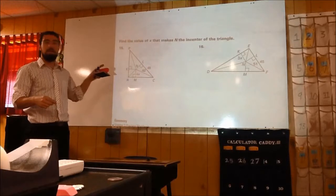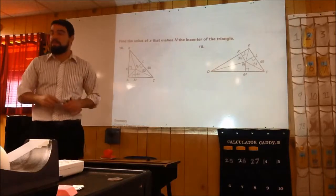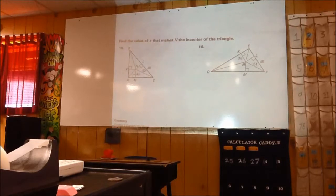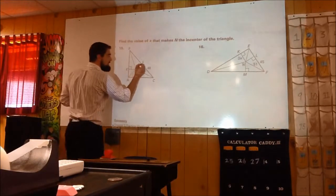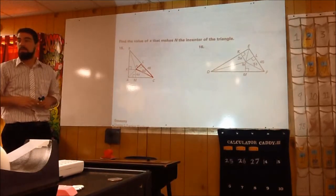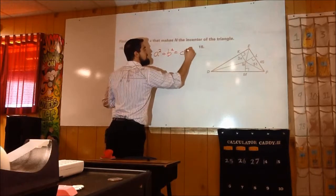Let's try number 15 together. First, identify the triangle that you have two side lengths of — one of those right triangles in the big one. For number 15, the right triangle I know two sides of is this one right here. What are we missing? One of the legs. Pythagorean's theorem says A squared plus B squared equals C squared.